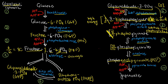In step ten, pyruvate kinase converts PEP into pyruvate. The phosphoenol prefix is removed, meaning that phosphate is taken away from PEP. Just like step seven, that phosphate goes to a molecule of ADP, producing ATP. Step ten is therefore another substrate-level phosphorylation reaction. PEP, like 1,3-bisphosphoglycerate, is a high-energy compound, and pyruvate kinase utilizes that energy to phosphorylate ADP.